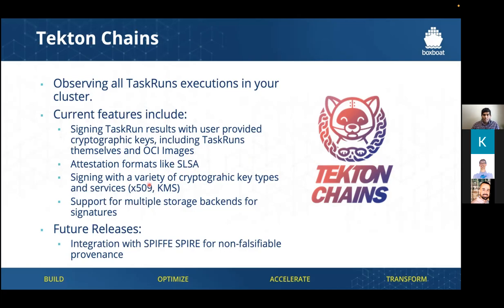Signing can be done with various different tools. We're going to be using a tool called Cosign — it's going to create a public and private key — but you can also use a KMS or whatever else you want for signing. By default, Tekton Chains stores information as an annotation in the actual task run object in your Kubernetes cluster, but you can have it store into an OCI registry, Google Cloud Storage, or a DocDB. You can specify multiple backends so that it stores in both the annotation and OCI.